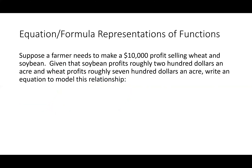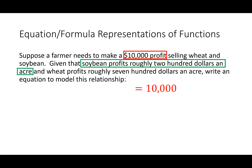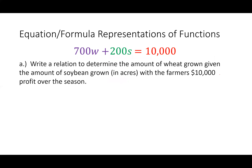So we've got a farmer, and let's set up a formula for his wheat and soybean. We have $10,000 of profit selling wheat and soybean. Soybeans are $200 an acre, so for every acre of soybean I get $200. I add that to $700 per acre of wheat, and I get this equation. The problem is this isn't a function because there are two variables represented as input. So we want to write a relation to determine the amount of wheat grown given the amount of soybean with the farmer's $10,000 profit.